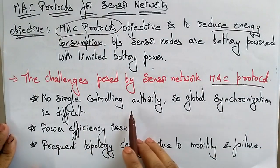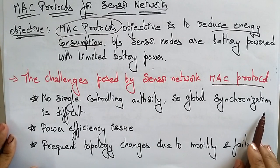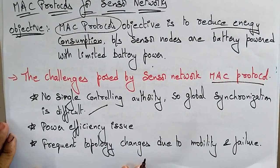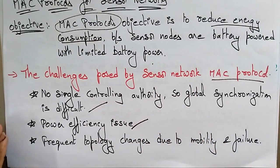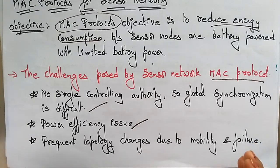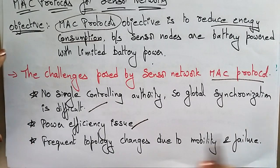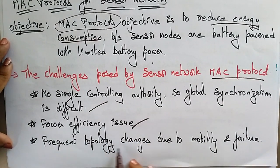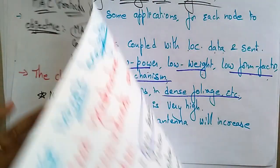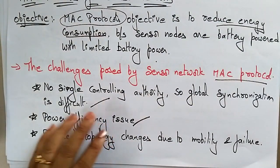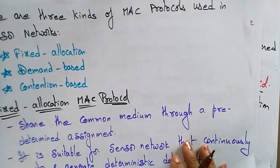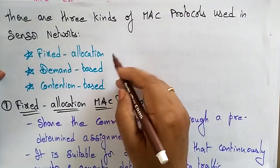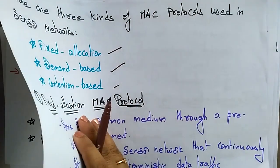The challenges posed by sensor networks for MAC include power efficiency issues and frequent topology changes due to mobility and failure. These are the challenges that have to be faced while designing MAC protocols. There are three kinds of MAC protocols used in sensor networks: fixed allocation, demand-based, and contention-based.